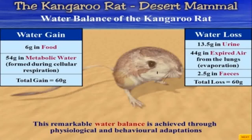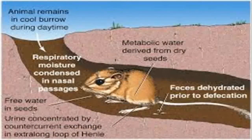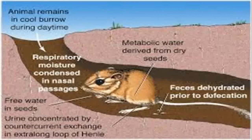Looking at the behavioral adaptation, the kangaroo rat stays in cool burrows during daytime. In the desert, it shelters during the day. It obtains metabolic water from seeds. Its metabolic waste is dehydrated — it does not lose excess water through defecation or excretion.